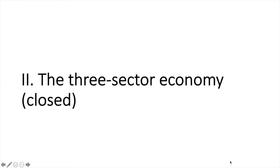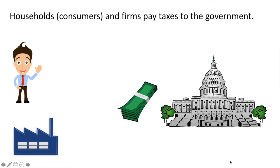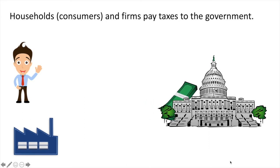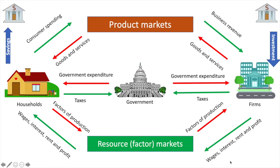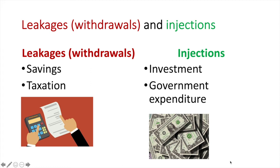Next is the three-sector economy, which is also closed but includes government. Individuals and firms are required to pay taxes to the government — these can be direct or indirect taxes and form the total tax revenue collected. In return, households and firms receive certain services and sometimes goods from the government. Both households and firms pay taxes to government; households receive goods and services, firms receive various services, and the government may also purchase goods and services from firms. Taxation is an additional leakage from the circular flow, while government spending is considered an injection as it increases the level of spending between households and firms.